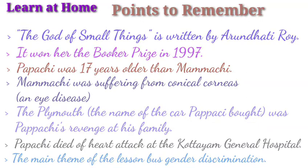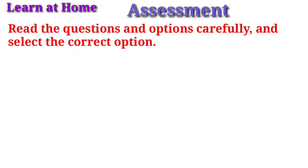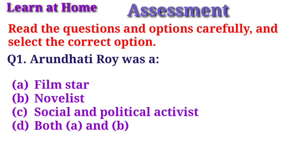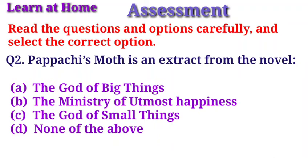Assessment: Read the questions and options carefully, select the correct option, and write your answers in the comment section below. Question 1: Arundhati Roy was — Option A: Film star; Option B: Novelist; Option C: Social and political activist; Option D: Both B and C. Question 2: Papachi's Moth is an extract from the novel — Option A: The God of Big Things; Option B: The Ministry of Utmost Happiness; Option C: The God of Small Things; Option D: None of the above.